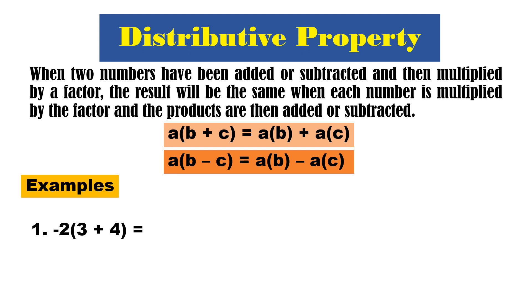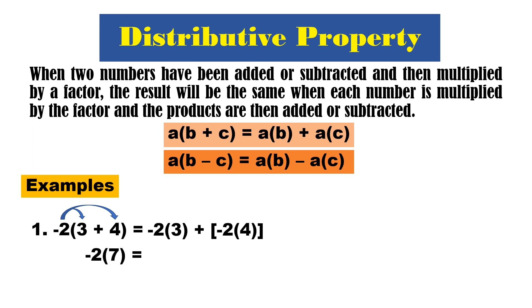Examples: we have negative 2 times the quantity of 3 plus 4. Distribute negative 2 kay positive 3 and kay positive 4 — so we get negative 2 times 3 plus negative 2 times 4. On the left, 3 plus 4 is 7, so we have negative 2 times positive 7. On the right, negative 2 times 3 is negative 6, and negative 2 times 4 is negative 8. The product of negative 2 and positive 7 is negative 14, and the sum of negative 6 and negative 8 is also negative 14. Equal!